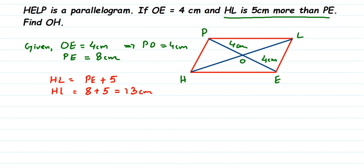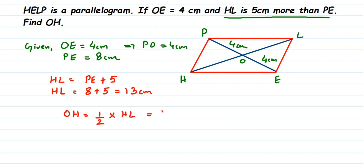We need to find OH, just this part of the diagonal. Since the diagonal bisects, OH = OL, and OH is half of HL. So OH = HL / 2 = 13 / 2 = 6.5 centimeters. The other part OL is also 6.5 centimeters.